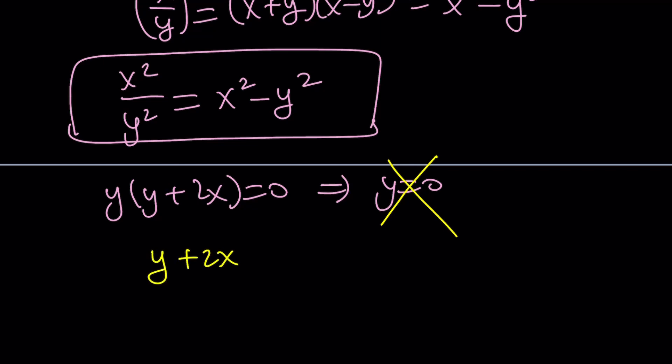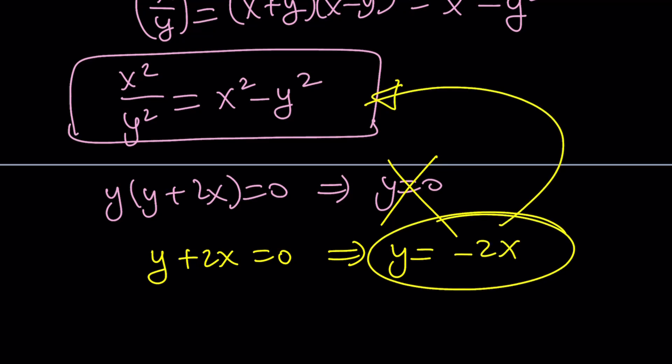And what about the second piece? We get y equals negative 2x from here. Awesome. That's something we can use here. Let's go ahead and substitute that and see what happens. Replace y with negative 2x.